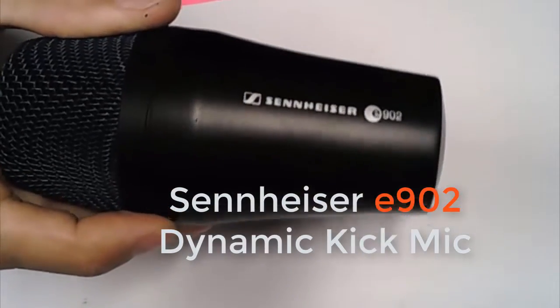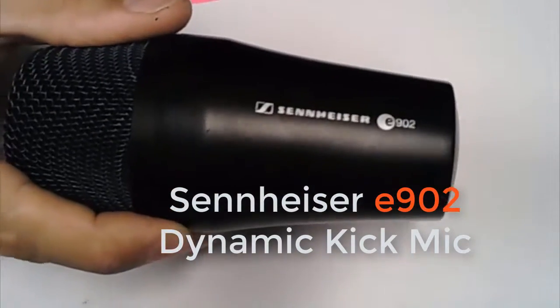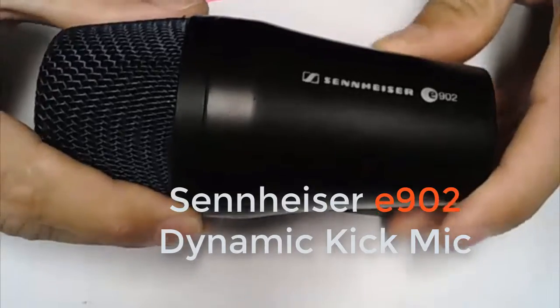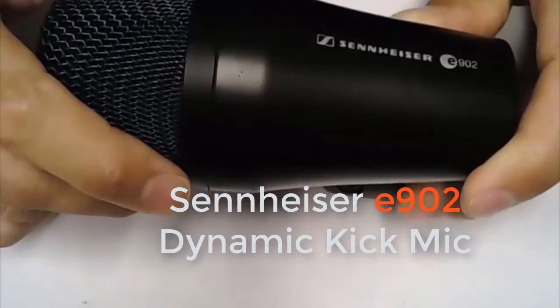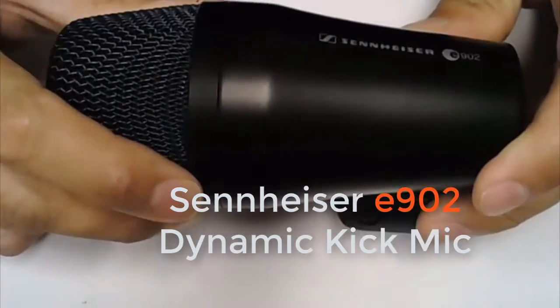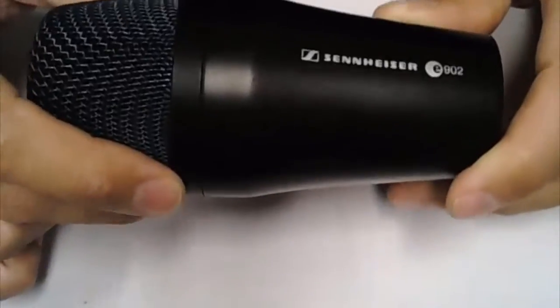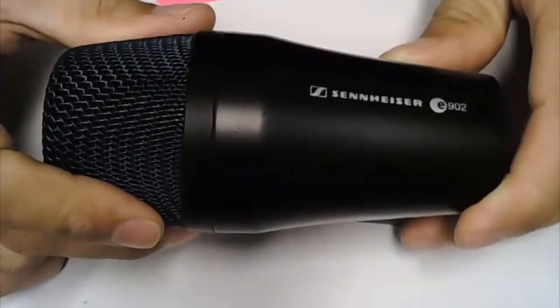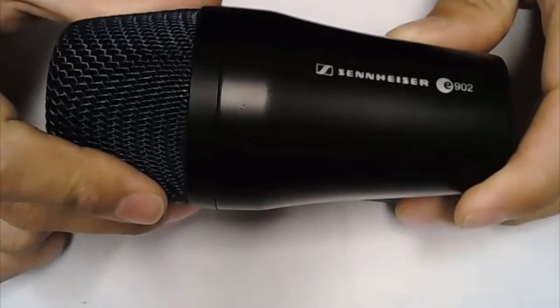So this is a dynamic purpose-built kick drum mic called a Sennheiser E902. To tell you the truth, I personally prefer Shure's version, which is a Beta 52. I just don't have one with me today. They're very similar mic. They're a really woofy, low frequency sort of mic.